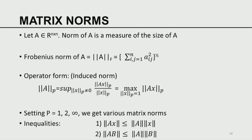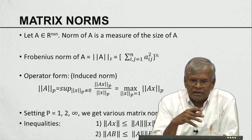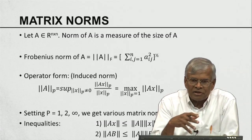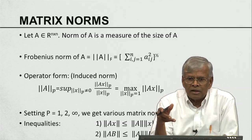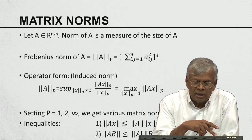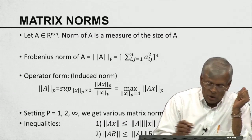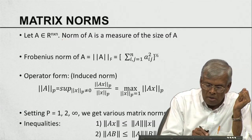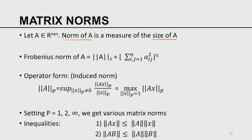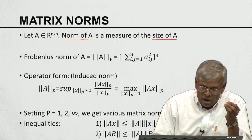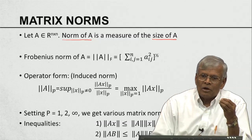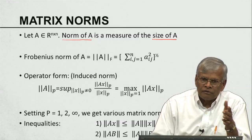Now we move on to another interesting concept relating to matrices. Just as vectors have a size — captured by the norm of a vector — matrices are also objects that can be endowed with a definition of size. The size of a matrix is defined by a norm of a matrix. Just as we had various vector norms (2-norm, 1-norm, infinity norm), in the case of matrices we also have a variety of norms. I will focus on some commonly used ones.